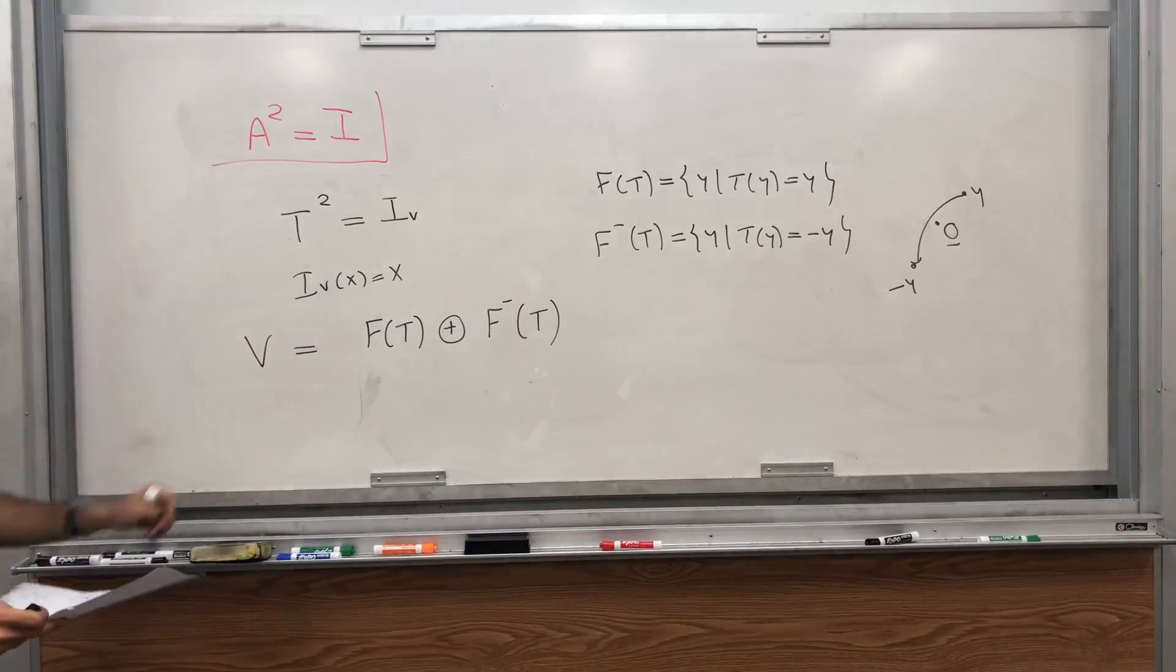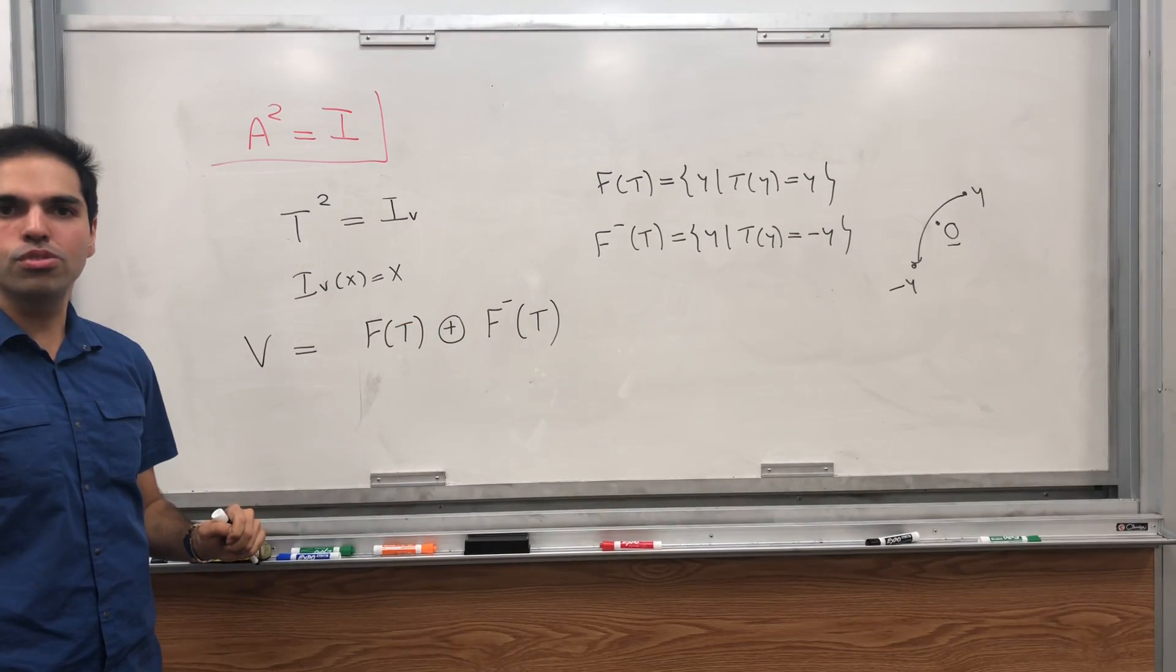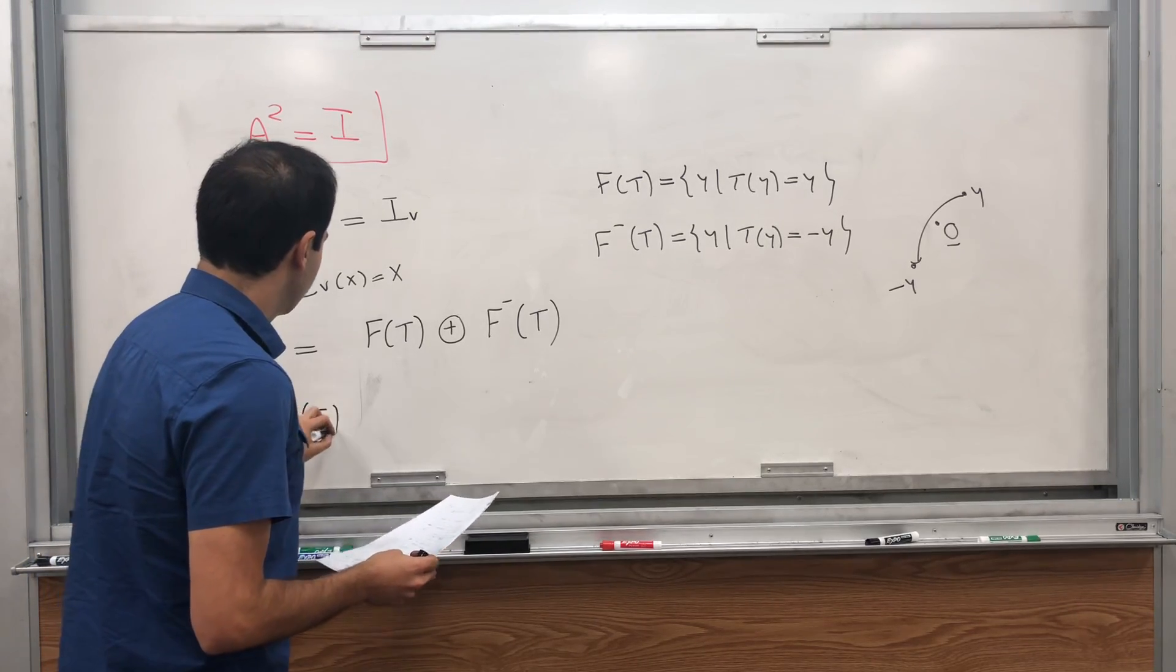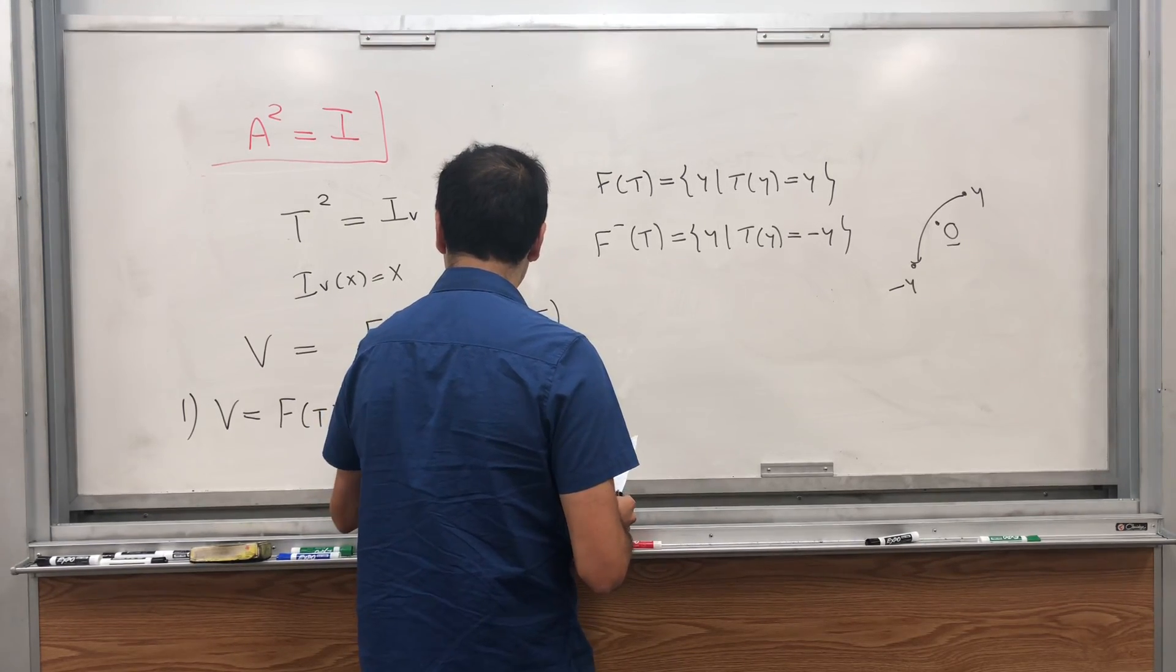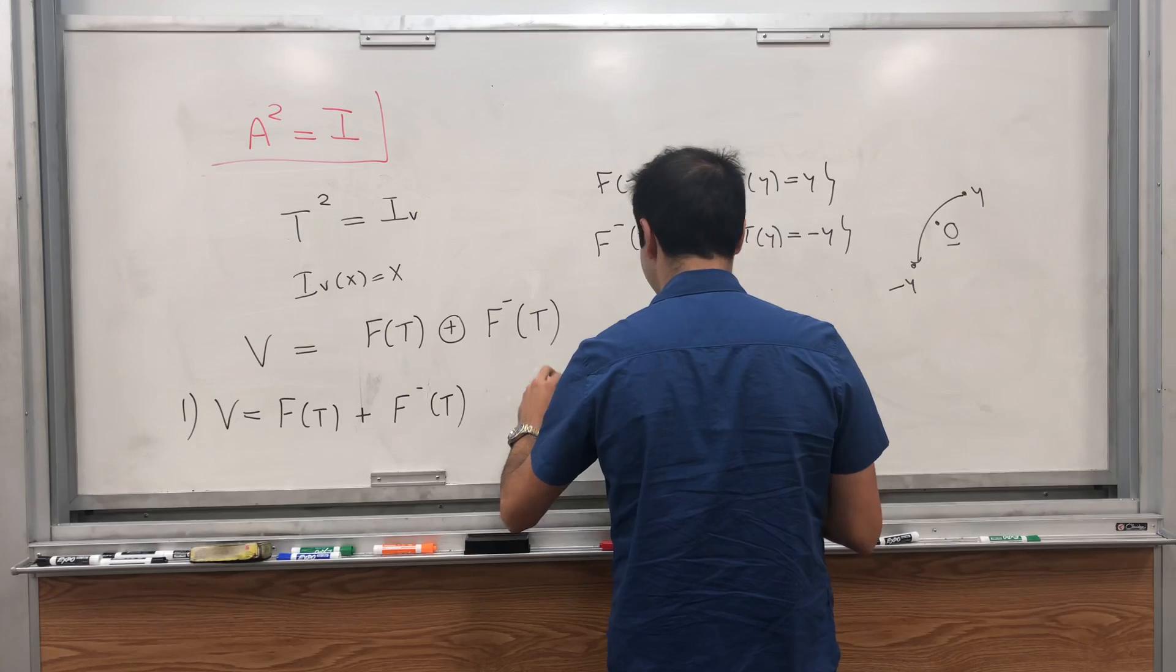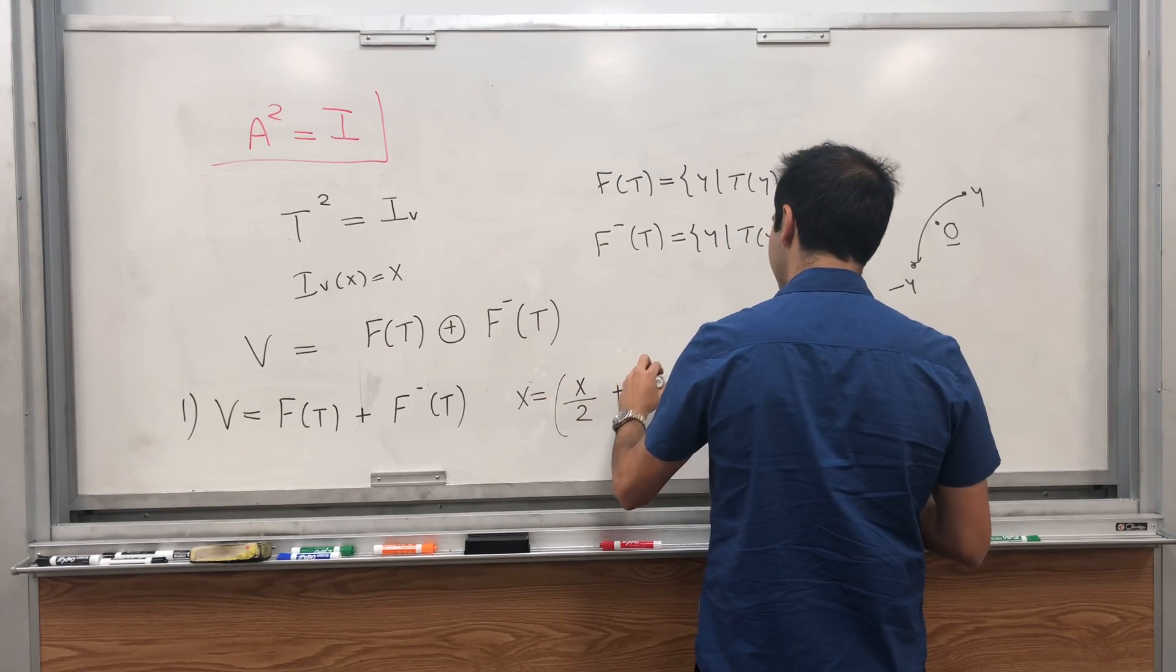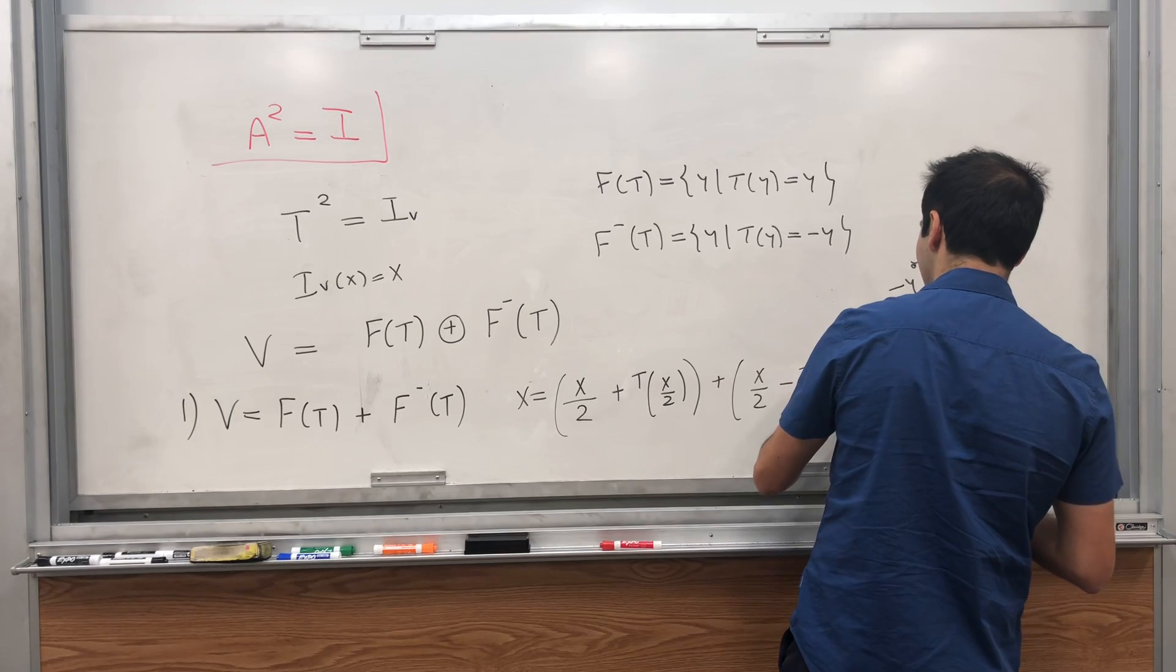And so what we have to show by the direct sum definition, we have to show any vector can be written as the sum of those two vectors, and also that the intersection of the two is non-trivial. So first of all let's show that V is the sum of two vectors, one in F(T) and the other one in F minus of T. And it's based on this crazy decomposition I finally figured it out. Any x in V can be written as x over 2 plus T(x) over 2, plus x over 2 minus T(x) over 2.